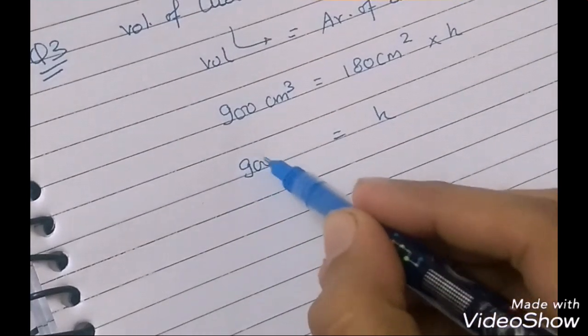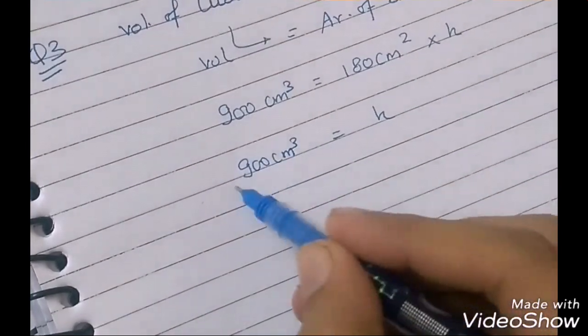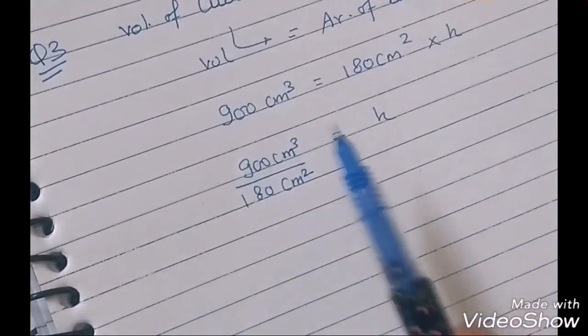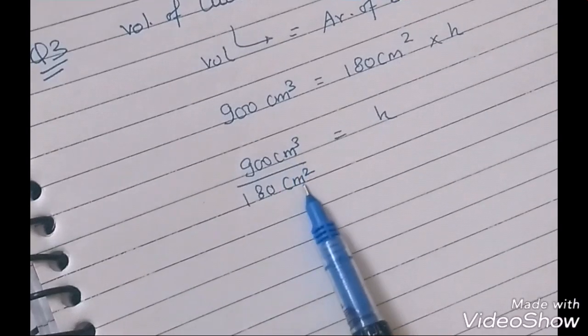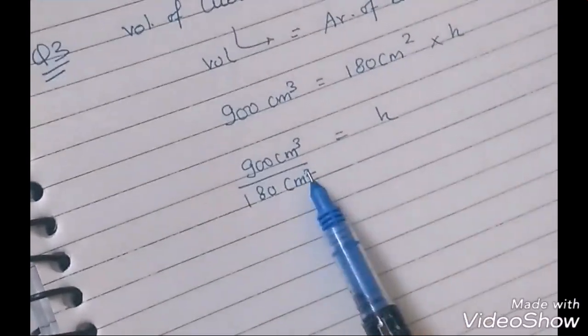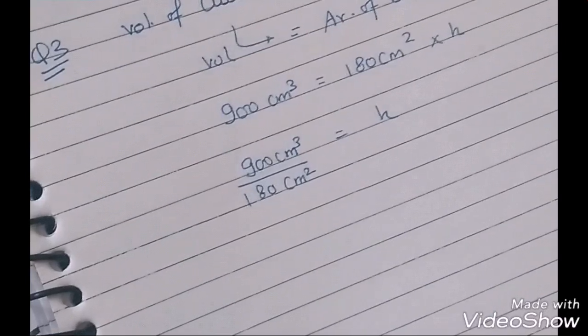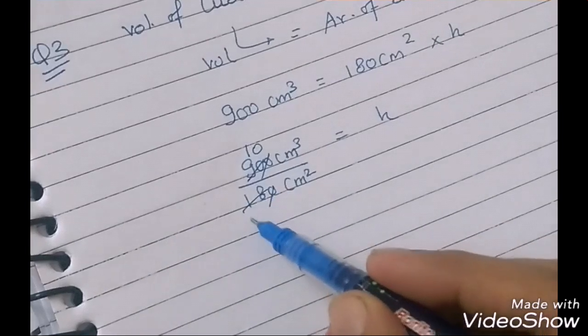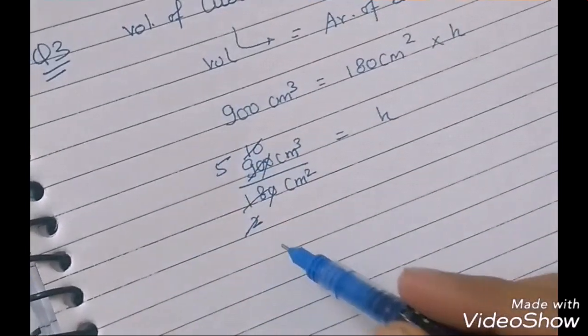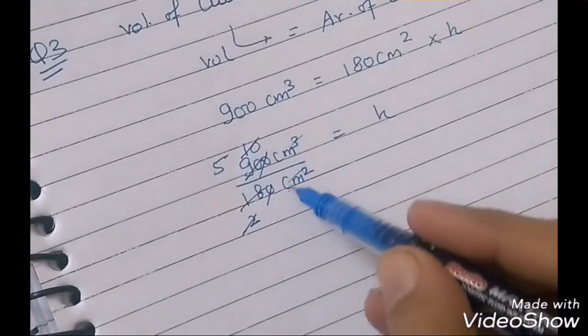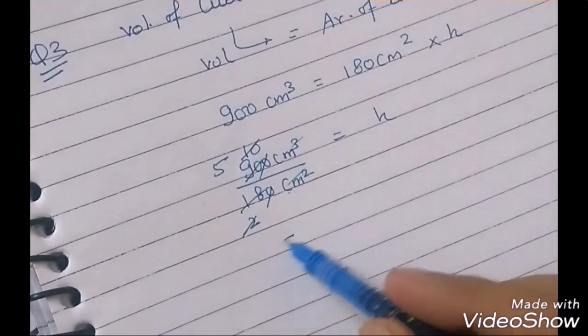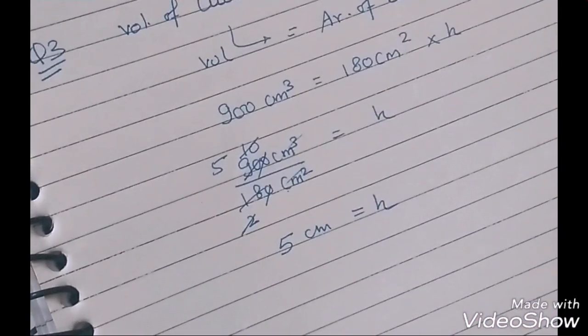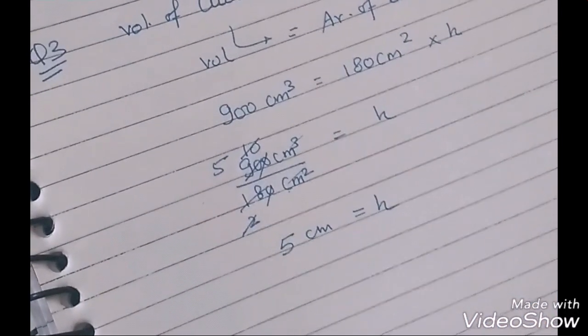900 cm³ upon 180 cm². I am just taking these cm² cube seriously because you will also understand what height is in cm². 10, 2, 5, 5. Here is the answer: 5 cm.